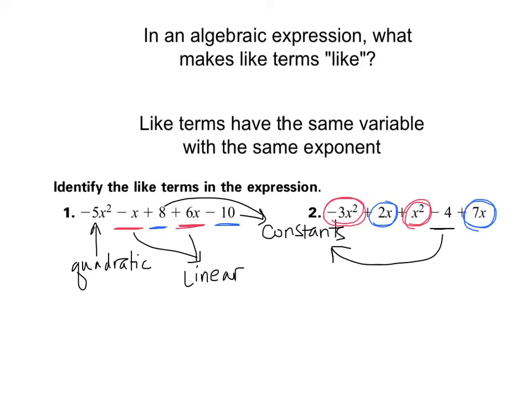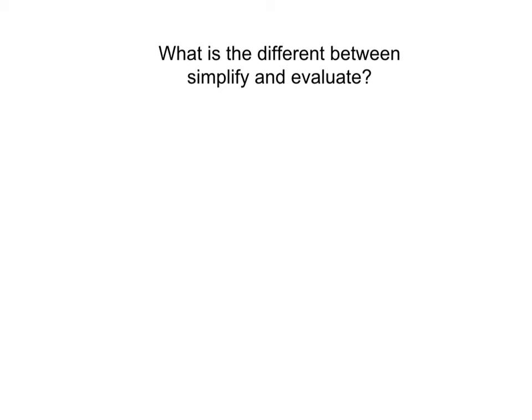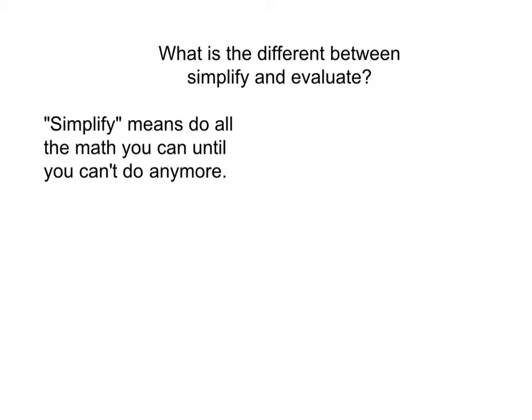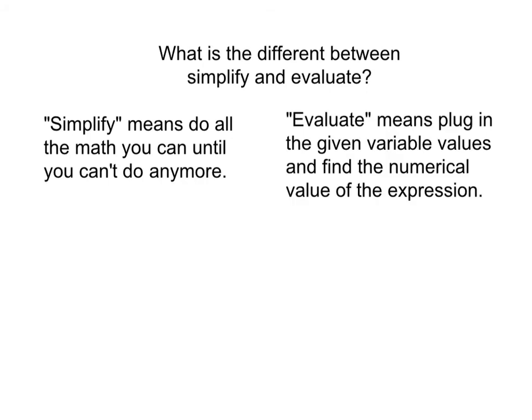So that's what makes like terms. We're not going to see too much in the way of algebraic expressions. Let's take a look at simplifying a couple of expressions. First looking at what makes the difference between simplify and evaluate. In order to simplify some expressions, we're going to first have to identify what the difference is here between simplify and evaluate. Simplify means do all the math you can until you can't do any more. So that's follow the rules of math until your answer is as simple as it gets. So we'll see in some cases that means your answer will be a number, a numerical answer. And in some cases it will be an algebraic expression where you can't simplify it any further. Evaluate, on the other hand, means plug in the given variable values and find the numerical value of the expression.